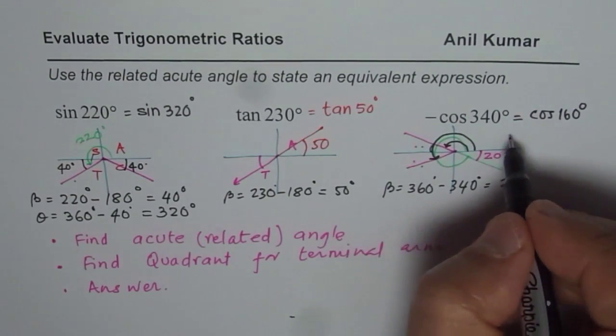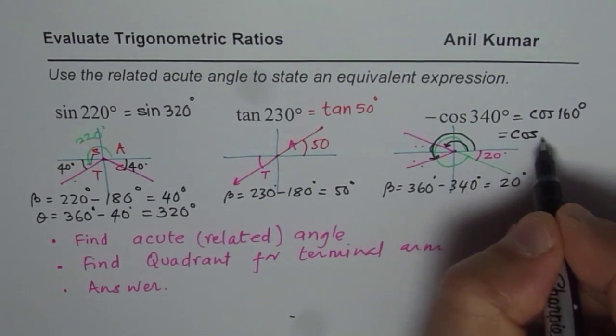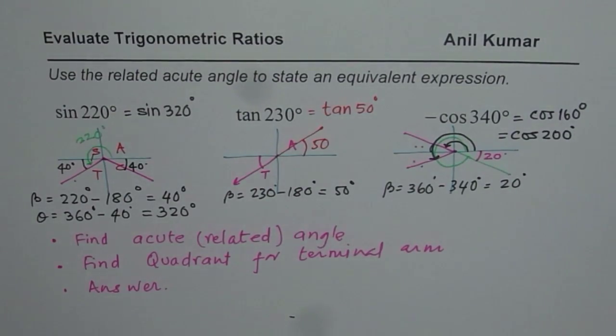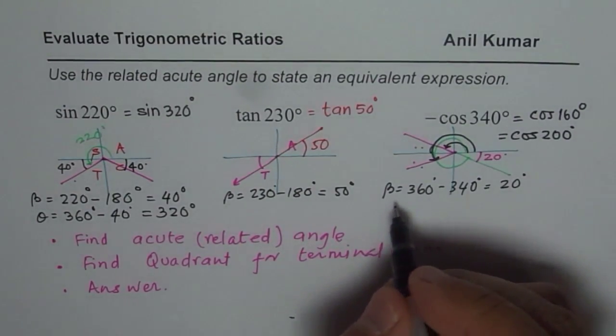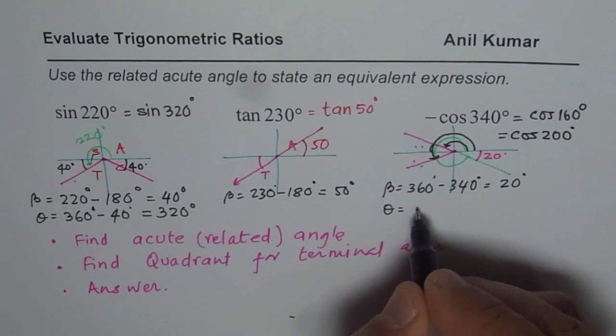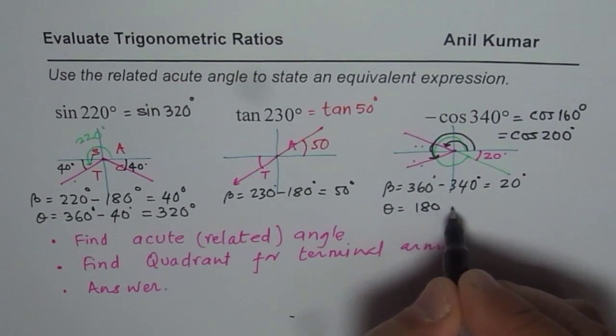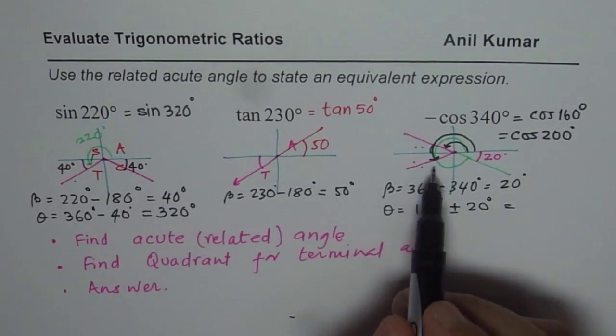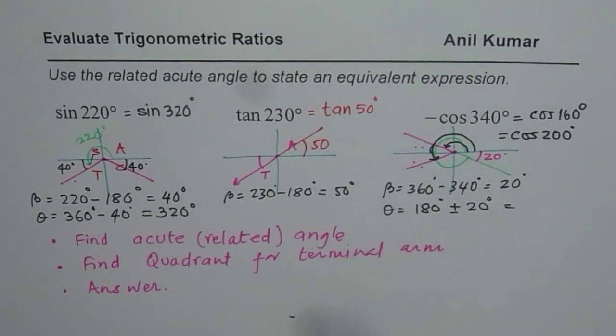So I could write this as cos of 160 degrees. If I am considering the angle in this quadrant, then it is 20 more than 180. So I could also write this as cos of 200 degrees. So basically my angle theta in this case will be 180 degrees plus or minus 20 degrees. Both will give me cosine in quadrant 2 or in 3 which will have negative value.